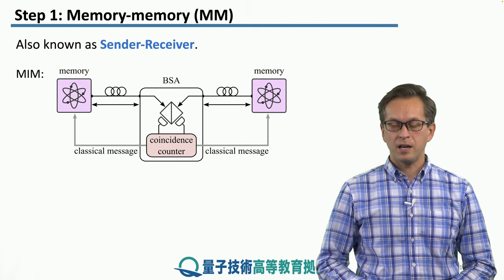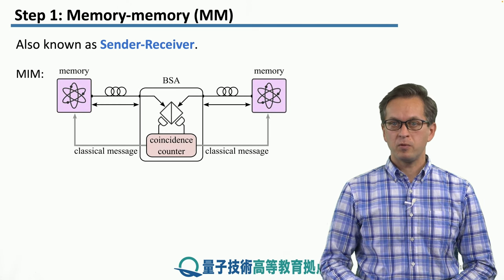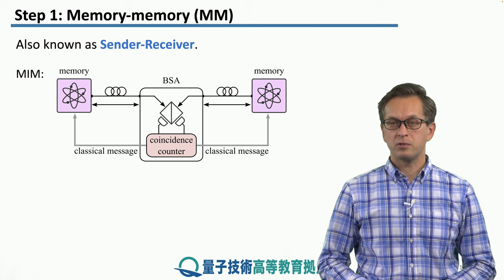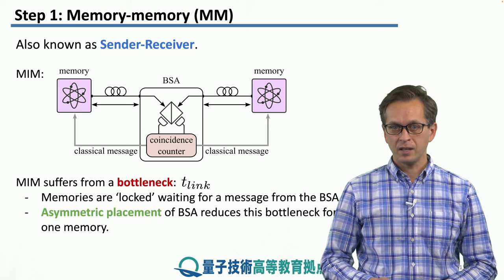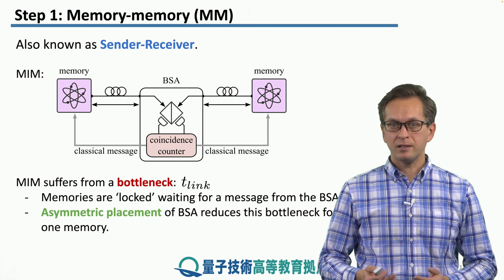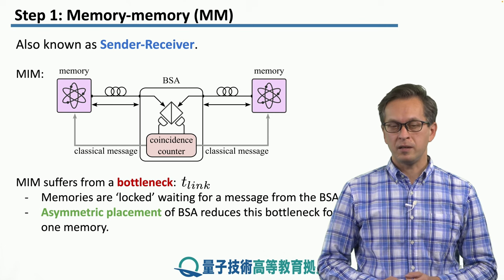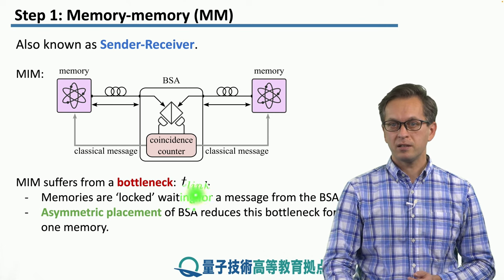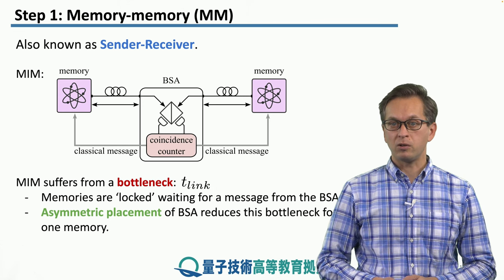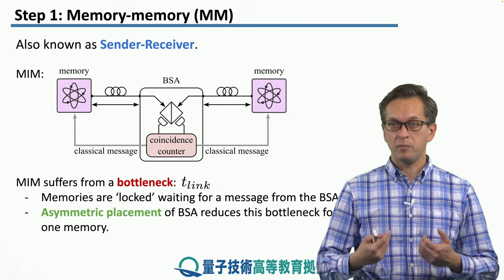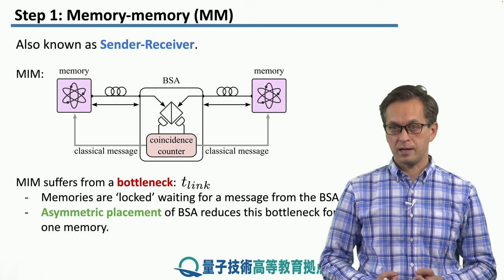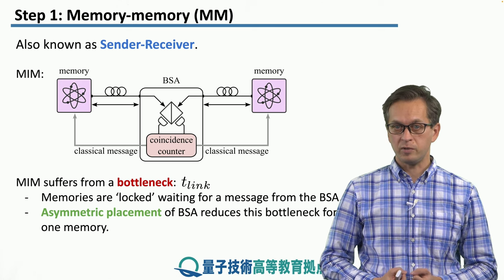In the MIM architecture, we had both memories being the senders, and they were sending their photons towards the BSA. And there was ultimately a bottleneck at the memories. For T-link, the memories were locked, meaning they emitted their photons, and then they were simply sitting there doing nothing, waiting for the classical message from the BSA.